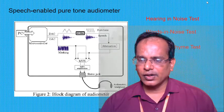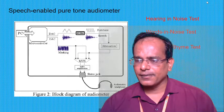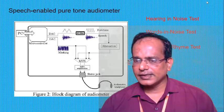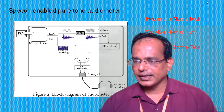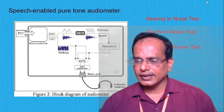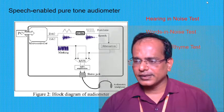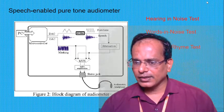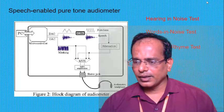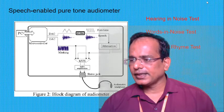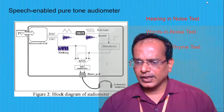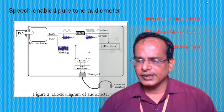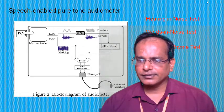The second test is the Words in Noise (WIN) test, which uses monosyllabic words presented at seven different signal-to-noise ratios with masking noise, typically speech spectrum noise. The WIN test yields a score for a person's ability to understand speech in a noisy background. Unlike the pure tone audiogram, the WIN test provides a more functional assessment of a patient's hearing in real-life noisy situations.